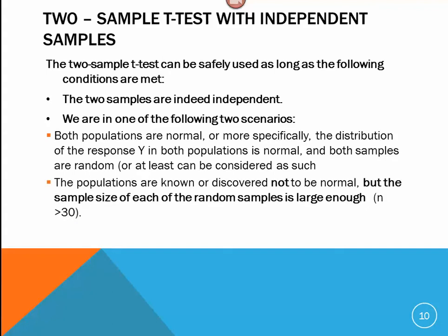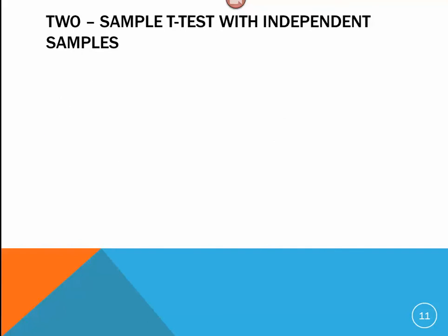Or, if we don't know about the distribution of the original variable, the populations are known or discovered not to be normal, but the sample size of each random sample is large enough. In other words, it's greater than 30. Given these two conditions are met, we can run a two-sample t-test for our independent samples.